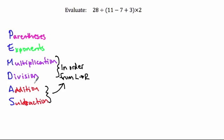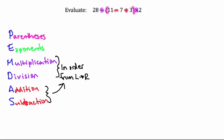I'm going to color code the expression based on operation type. First I'll look for parentheses and color those pink — I see parentheses in two places. There are no exponents, so no green. I'll then identify multiplication and division symbols, and finally highlight any addition or subtraction, which I can see inside the parentheses.